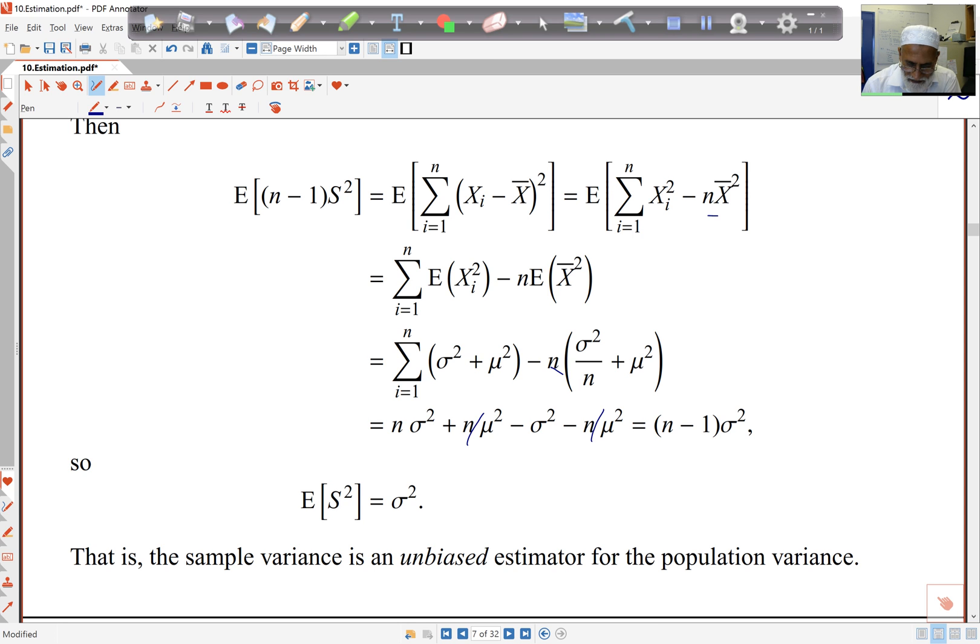And I've got n sigma squared minus 1 sigma squared, that's n minus 1 sigma squared. So with n minus 1, if I remove the n minus 1s, I get that E of S squared is sigma squared.